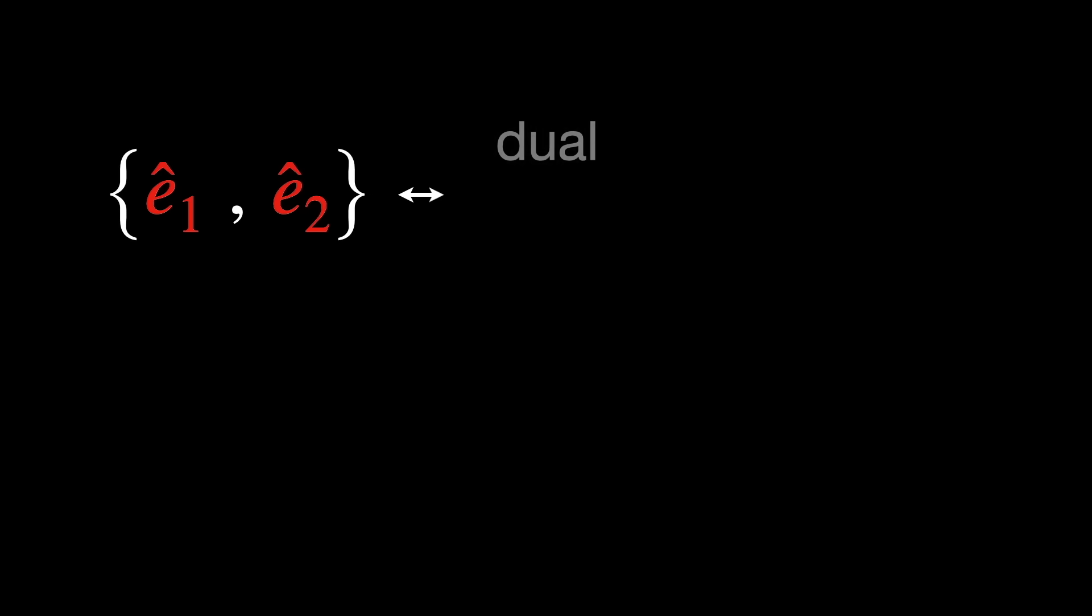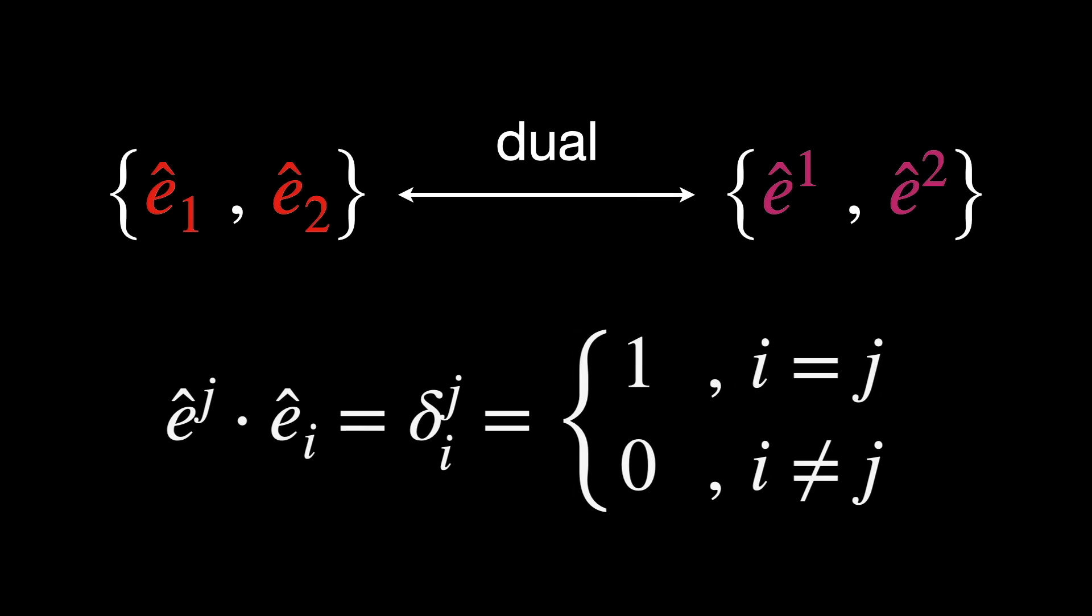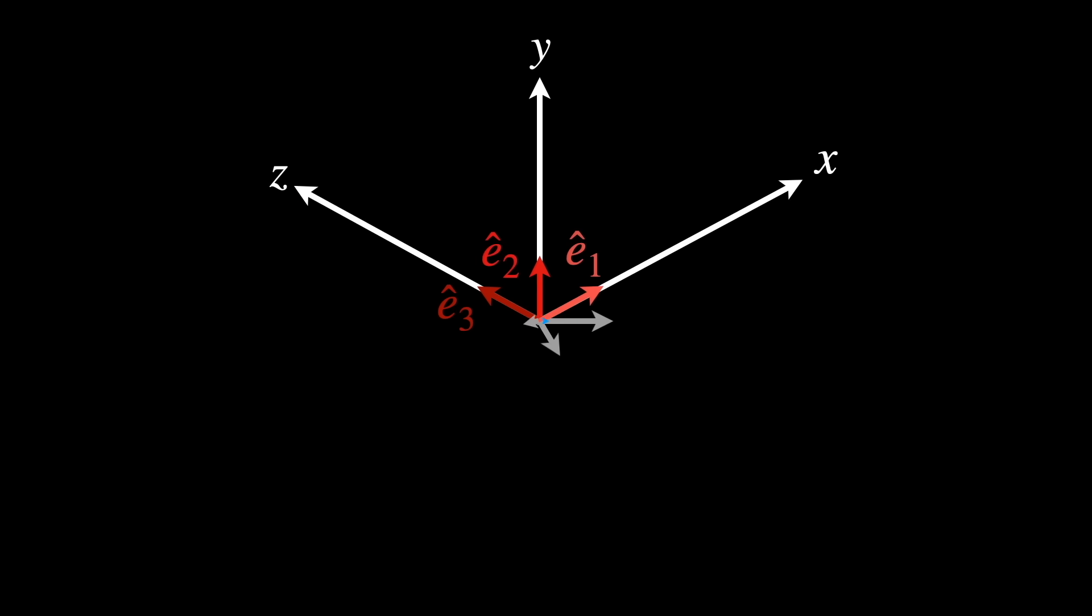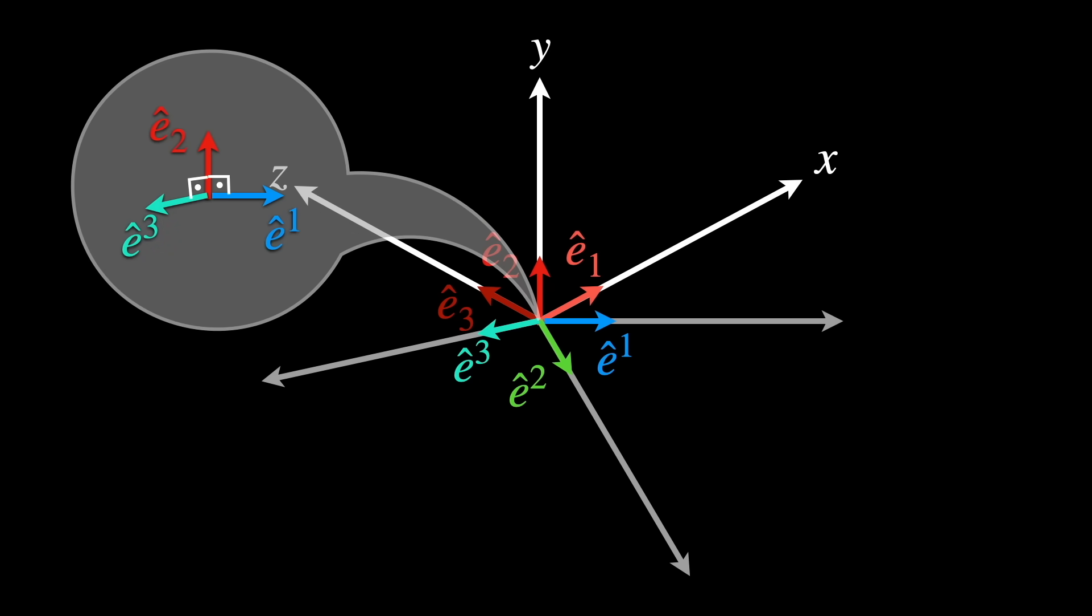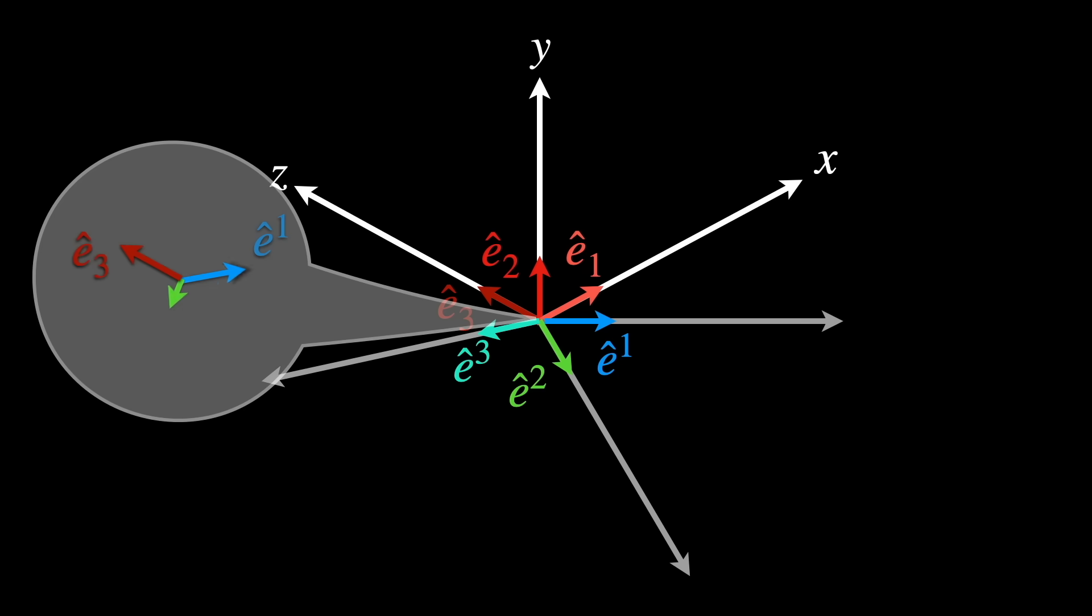Any two bases, e₁ and e₂ subscripts, and ê¹ and ê² with superscripts, are dual with respect to each other. And this is so if they satisfy these conditions. êʲ dot product with eᵢ results in the Kronecker delta, or the identity matrix. This means, for example, in three dimensions, that e₁ subscript is orthogonal to ê² superscript, and also to ê³ superscript, but not to its counterpart ê¹ superscript, in other words, its own dual. The same is valid for e₂ subscript. It is orthogonal to ê¹ superscript and to ê³ superscript, but not to its own dual ê² superscript. And the same is also true for e₃ subscript.